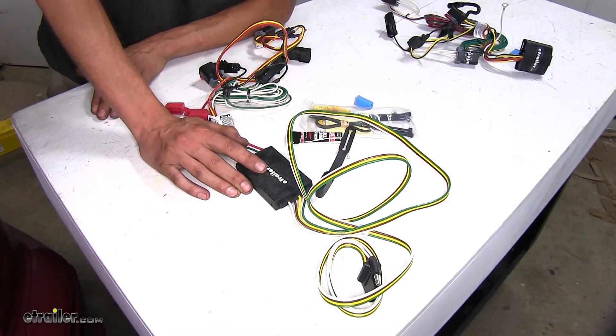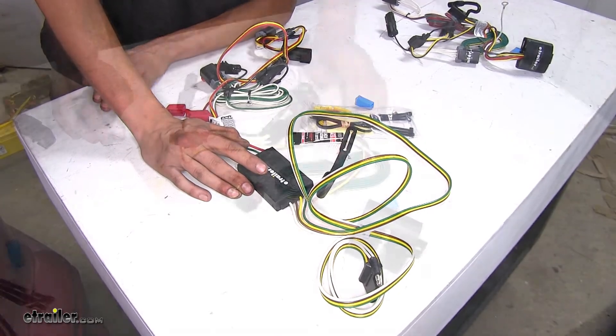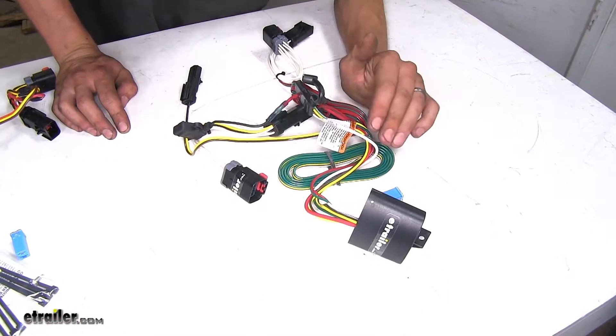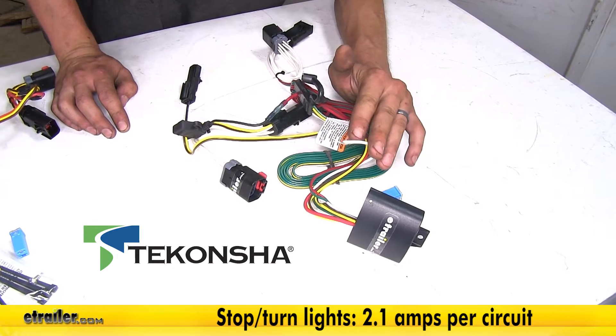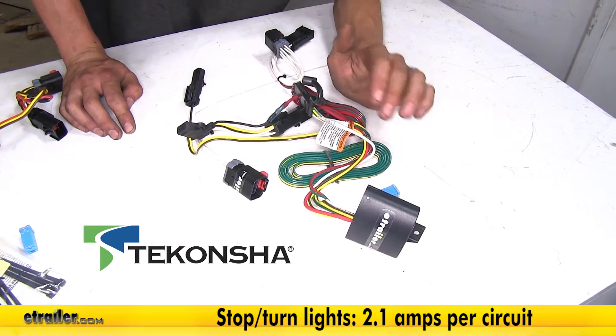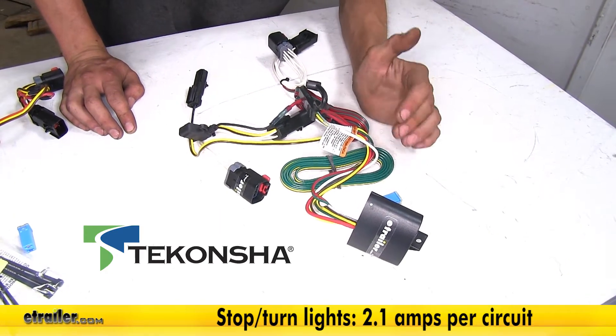Now in our Takansha wiring harness here, we have 2.1 amps of power output for our turn signals and brake light circuits per side. So it's a little bit less here.